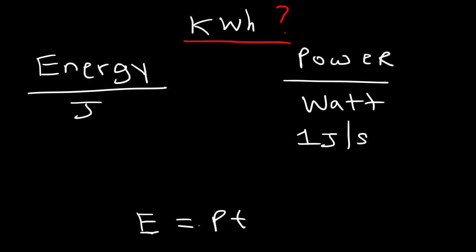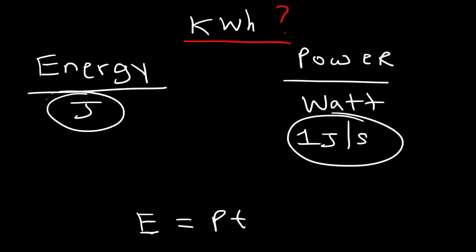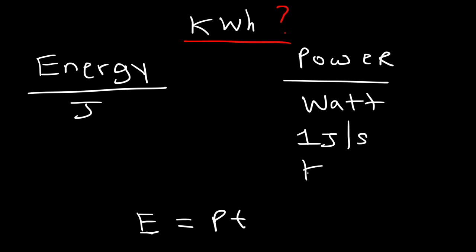One watt is one joule per second, so energy is power multiplied by time. If you take the power in joules per second and multiply by the time in seconds, you'll get the unit joules. Another unit of power is the kilowatt, and one kilowatt is a thousand watts.